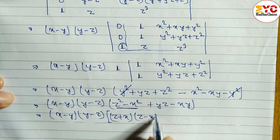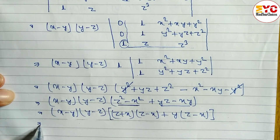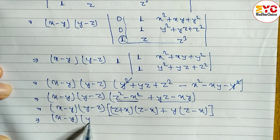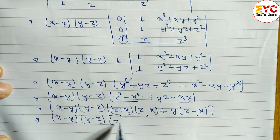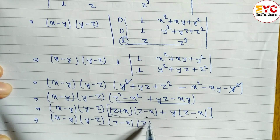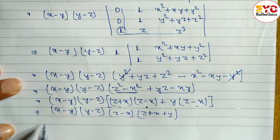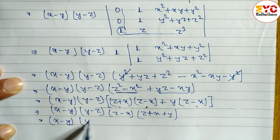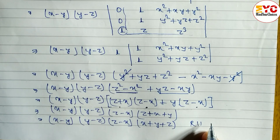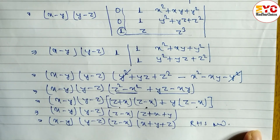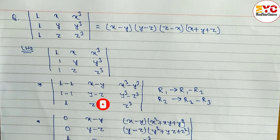Now we apply the difference of squares formula: z² minus x² = (z + x)(z minus x). From the remaining terms we take y common, giving y(z minus x). So the expression becomes (z minus x)(z + x + y). Combining everything: (x minus y)(y minus z)(z minus x)(x + y + z), which equals RHS. Proved! If you understand this video please hit the like button, subscribe to the channel, and hit the bell button to get notifications of upcoming videos.